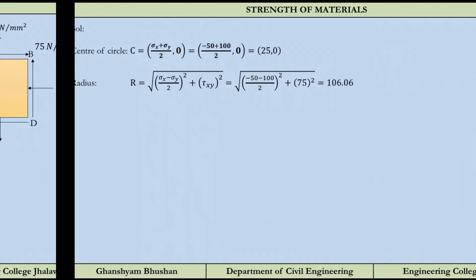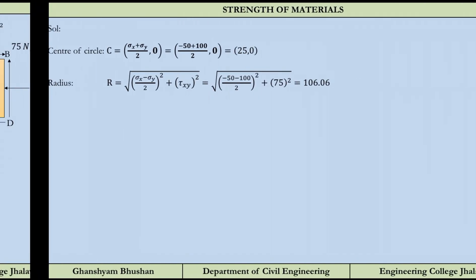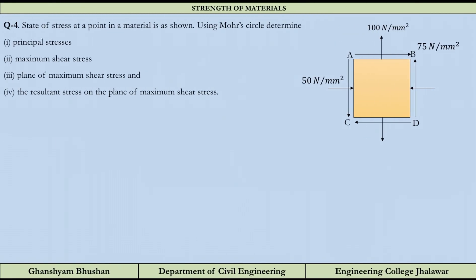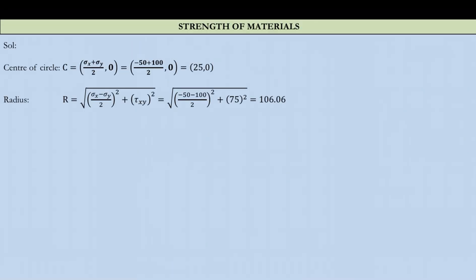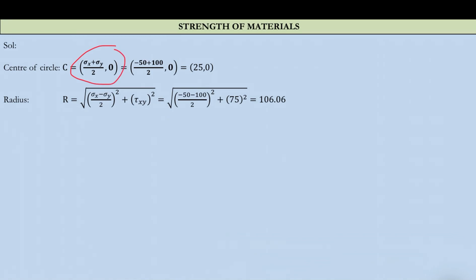To draw a circle, first we need to determine the center and second is to determine the diameter or the radius. These two parameters are required to draw any circle. The center can be given by the formula discussed in the previous lecture: the coordinates of the center are (sigma_x + sigma_y)/2, comma 0. So the center will always lie on the sigma axis, because it has coordinate 0 against the tau axis.